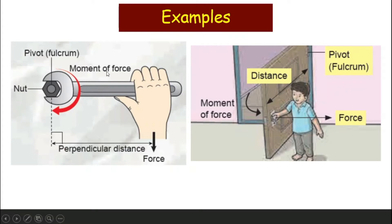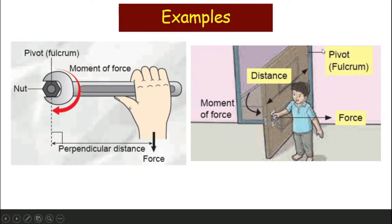What is the perpendicular distance? Taking the fulcrum as your reference point, you draw a line from the fixed point to where the force is applied, and you measure that distance. You can see these two lines — the distance and the fixed point — form a 90-degree angle. That is what perpendicular distance means.